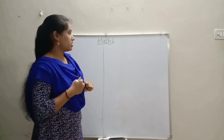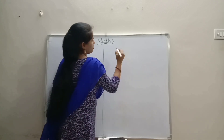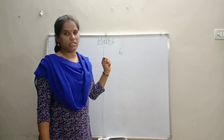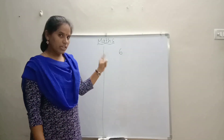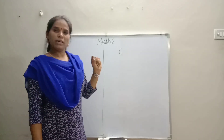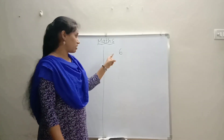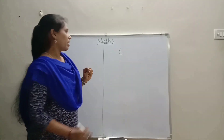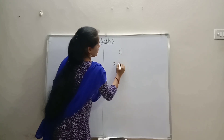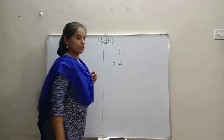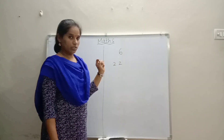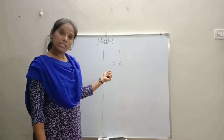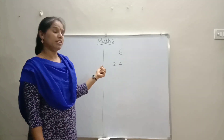Now children, what is the number? Yes, number 6. Number 6, is that single digit or double digit? Yes, 6 is a single digit, right? And 22 — is 22 a single digit or double digit? Yes, double digit.